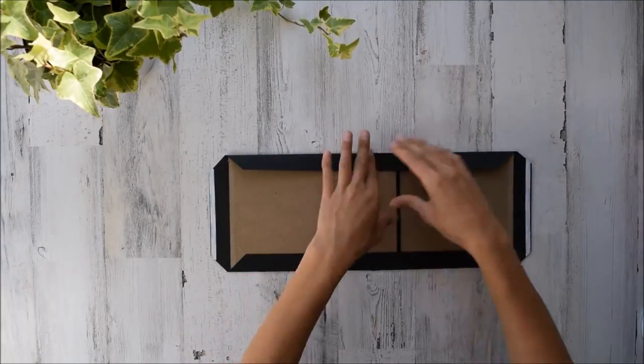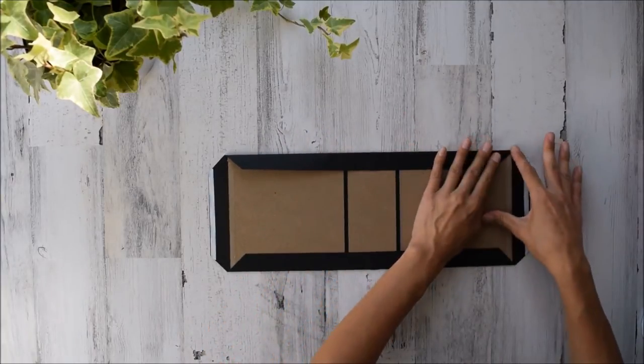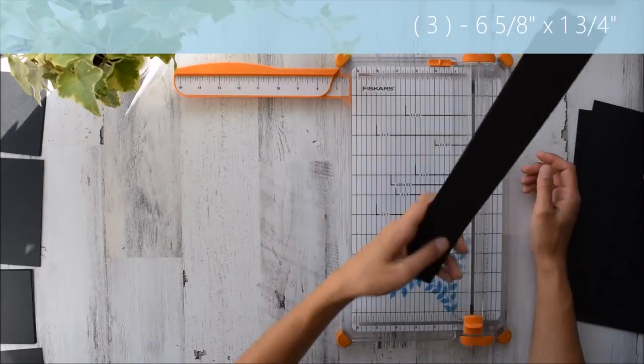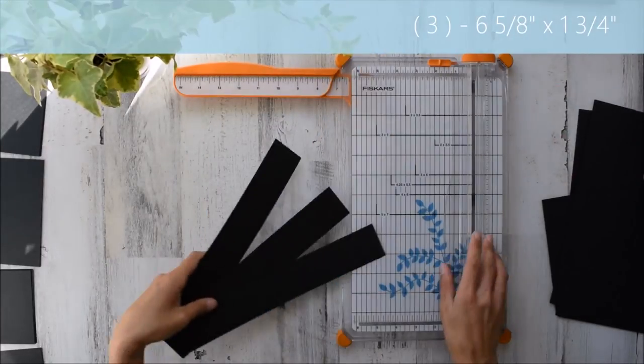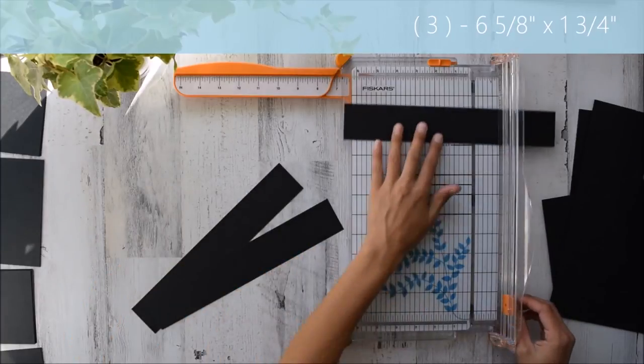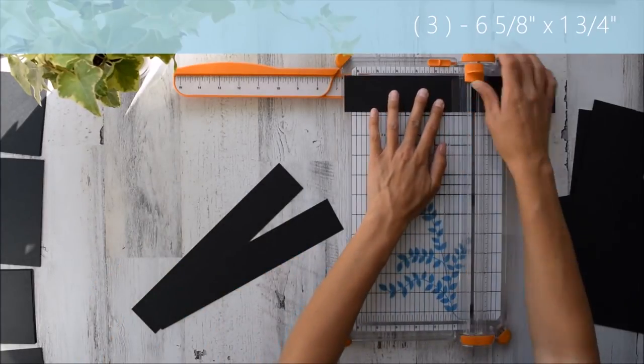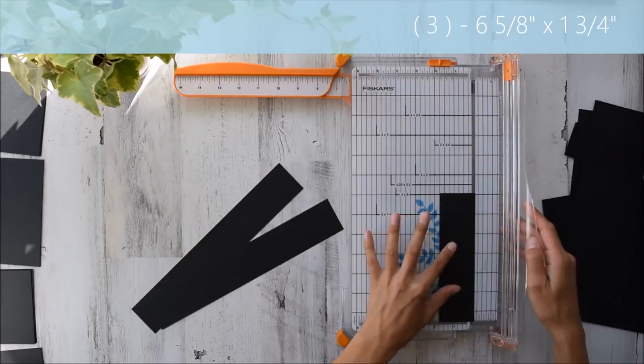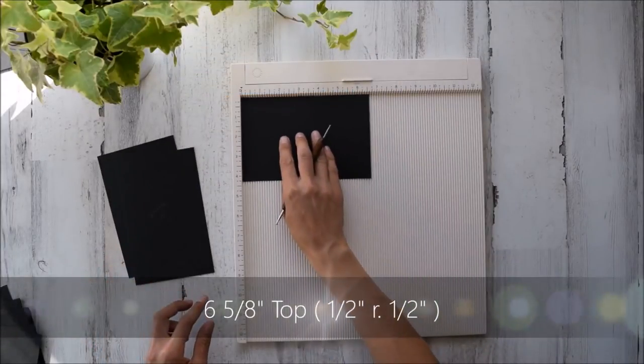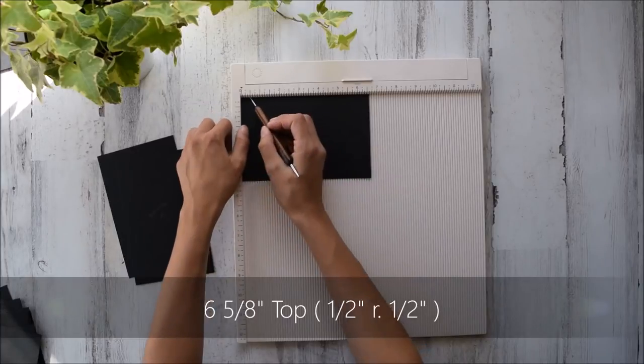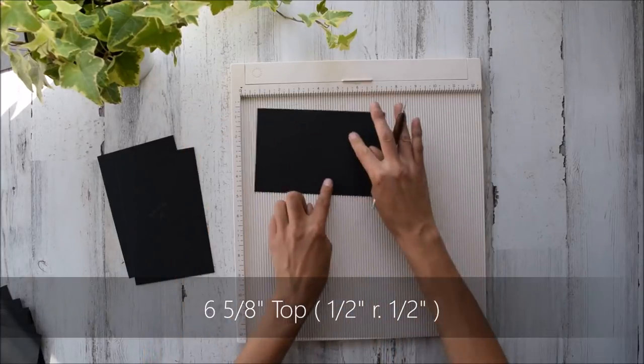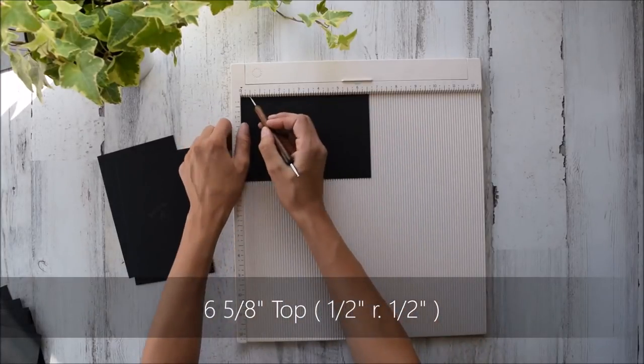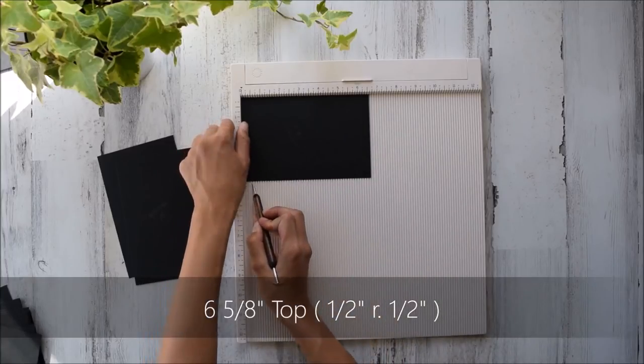Center first. It's over that corner. Perfect. Look, I have strips over here for my first pages that we cut out. I'm going to go six and five eighths by one and three quarters. Six and five eighths along the top. Half inch. Rotate opposite side. Half an inch again.